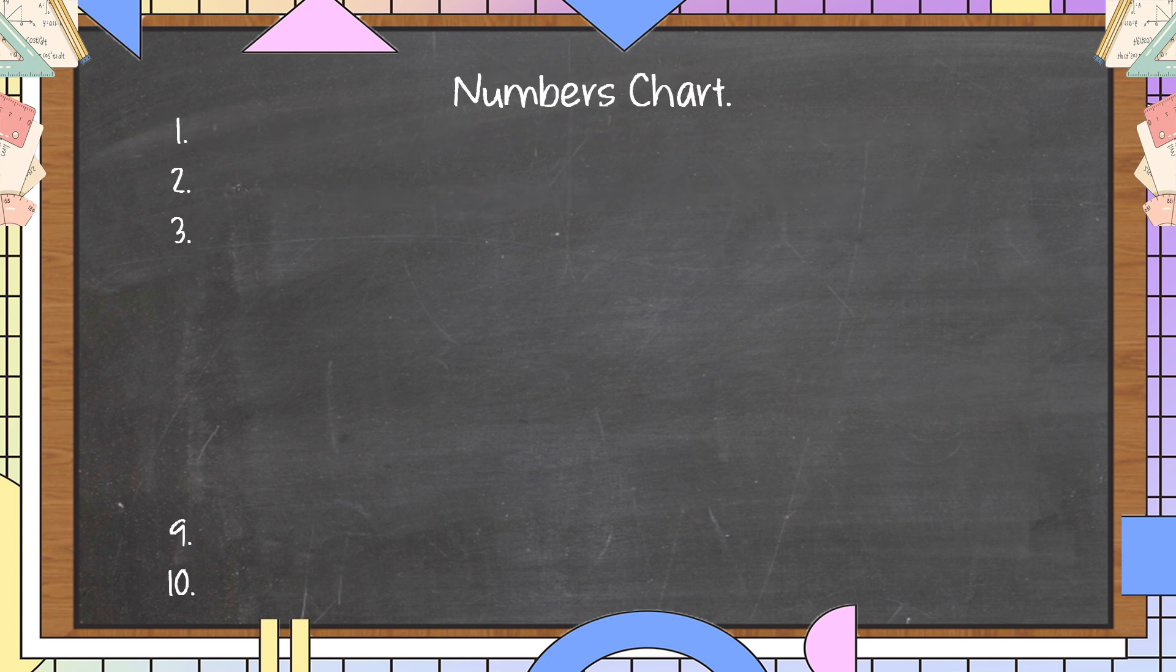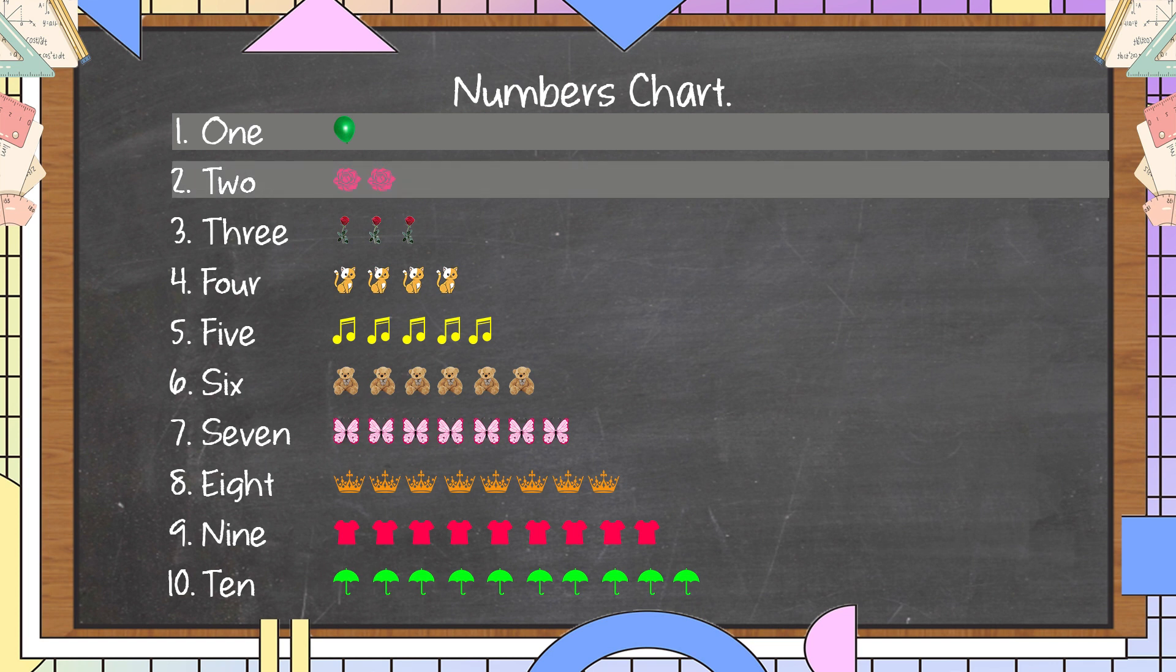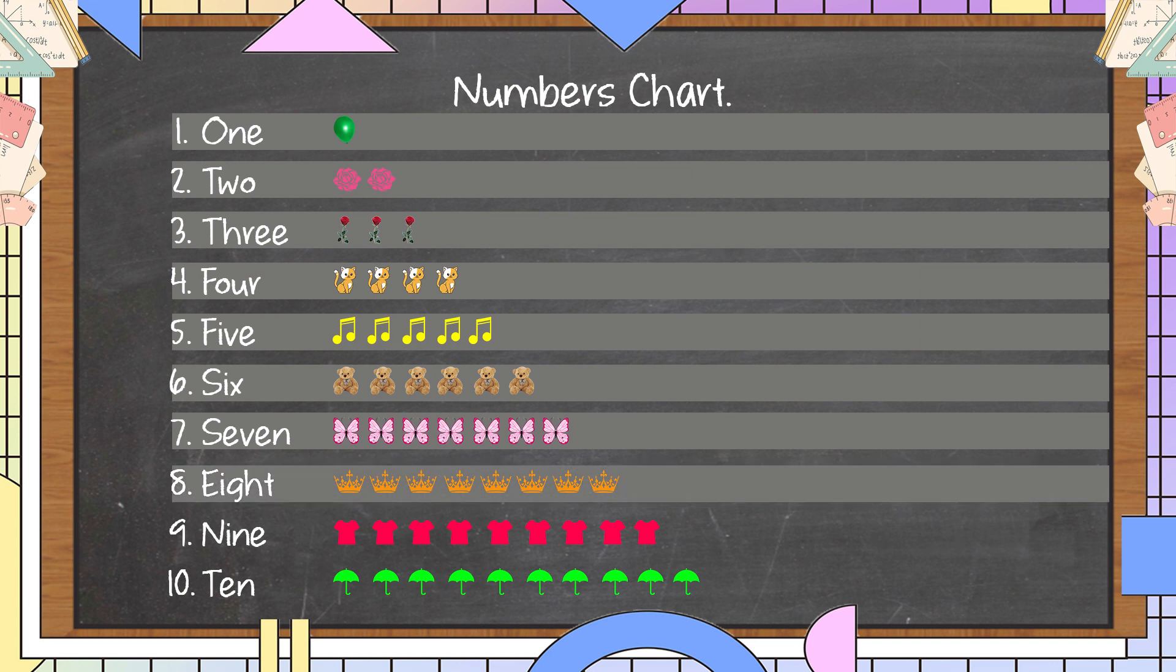Numbers chart. One. Two. Three. Four. Five. Six. Seven. Eight. Nine. Ten.